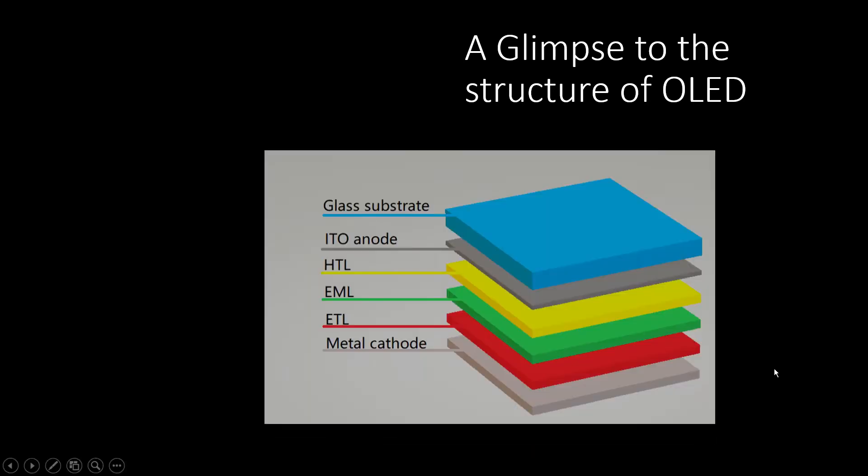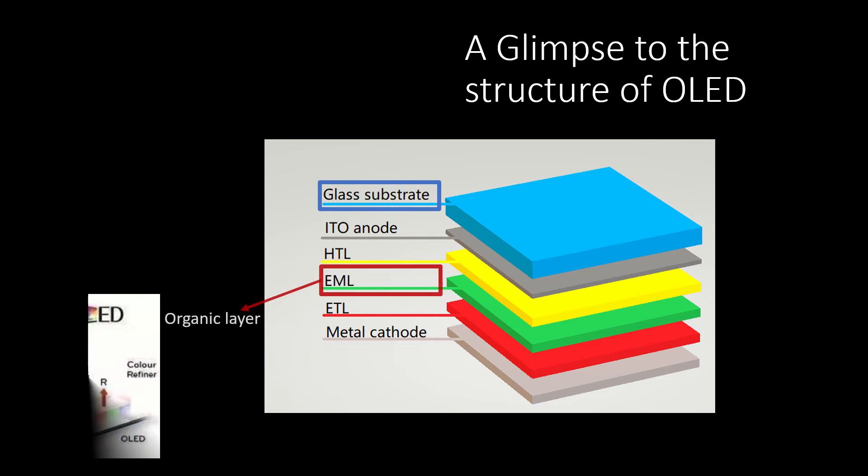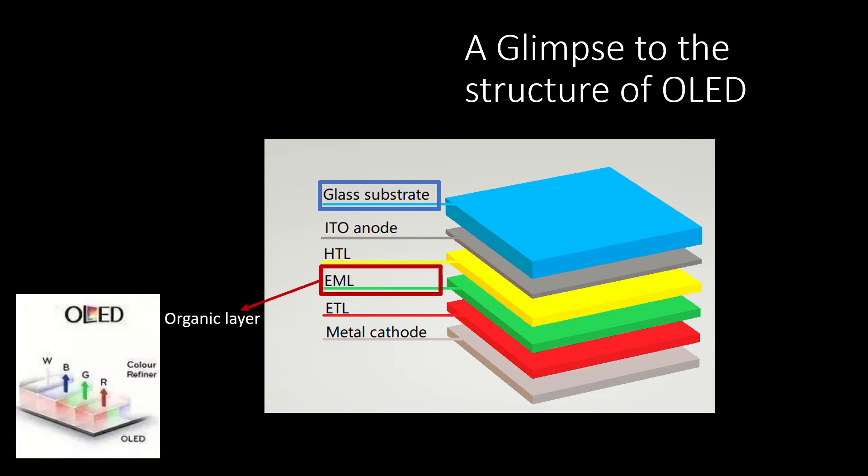Now let's take a glimpse to the structure of OLED. First, a substrate which is usually made out of glass or metal. The substrate requires transparency for visible light, smooth and low surface roughness.